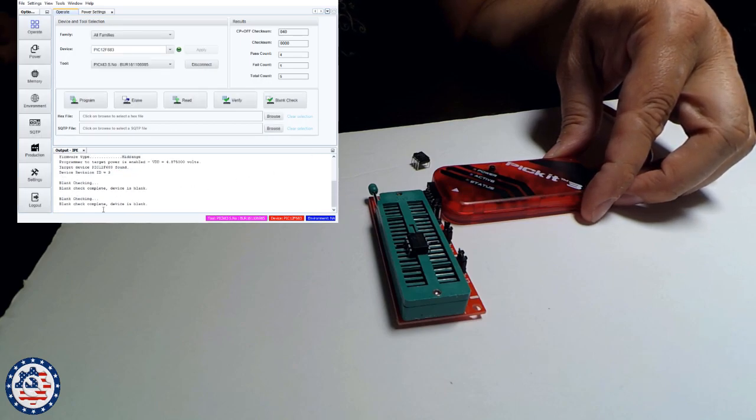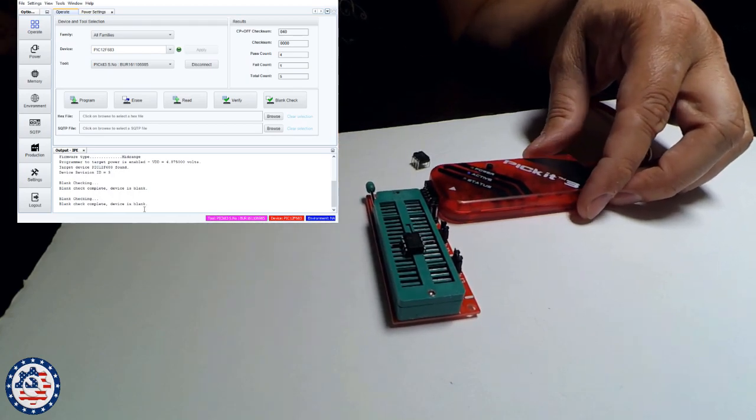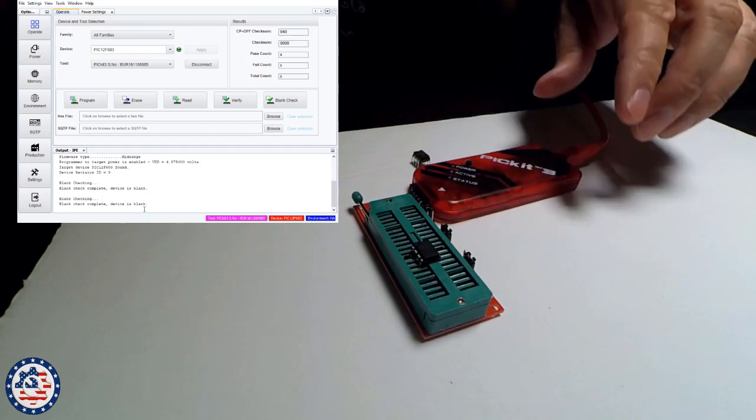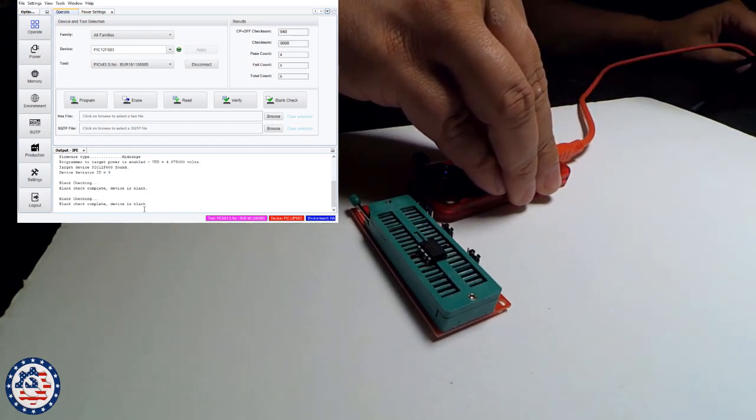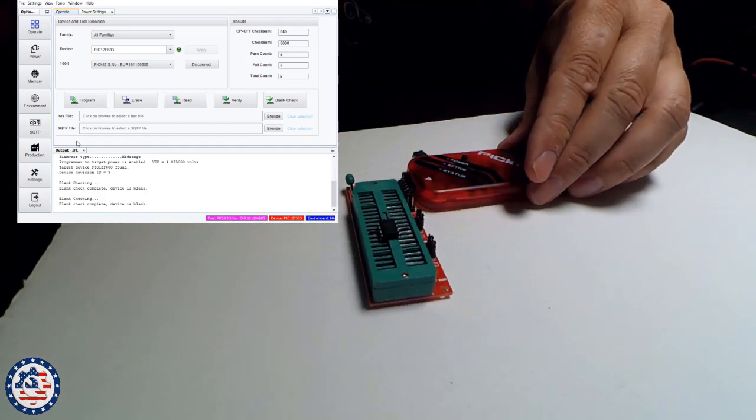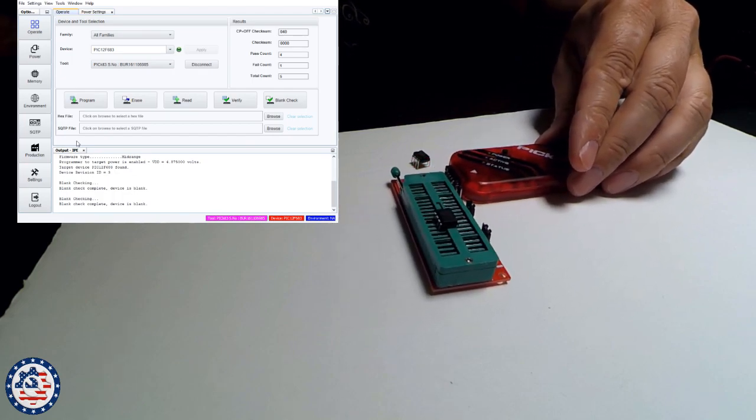So it says blank check complete. Device is blank. So I have two blank chips. Next, what I'm going to do is go ahead and program the chip using a hex file.